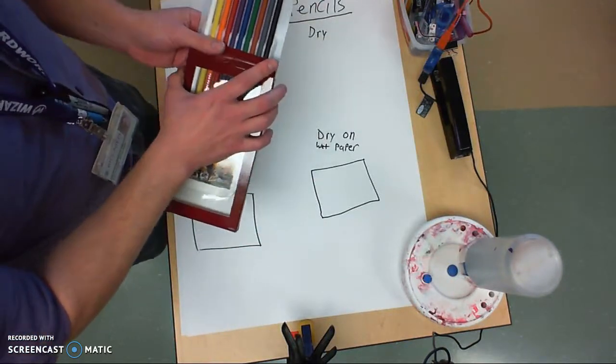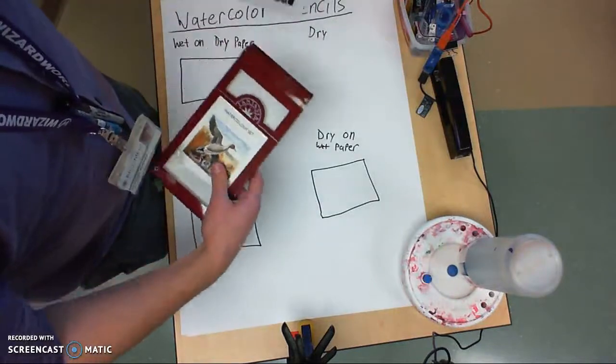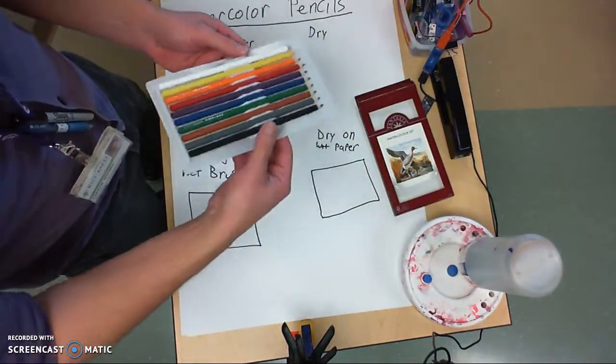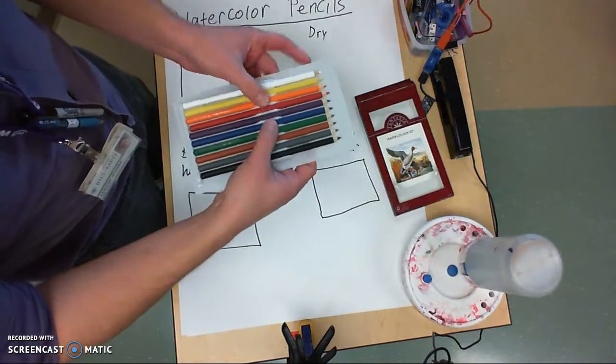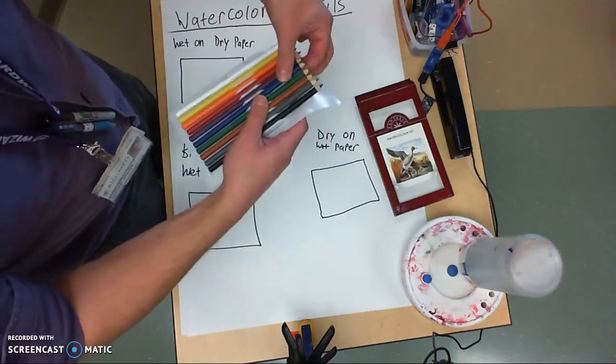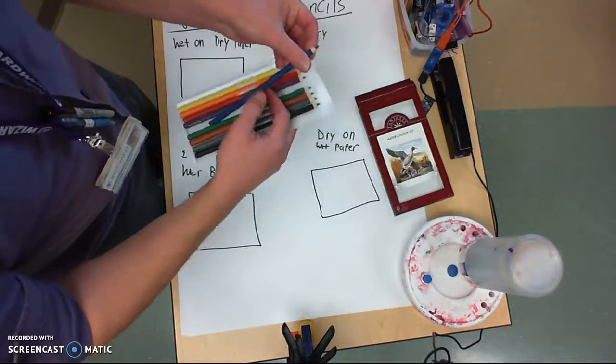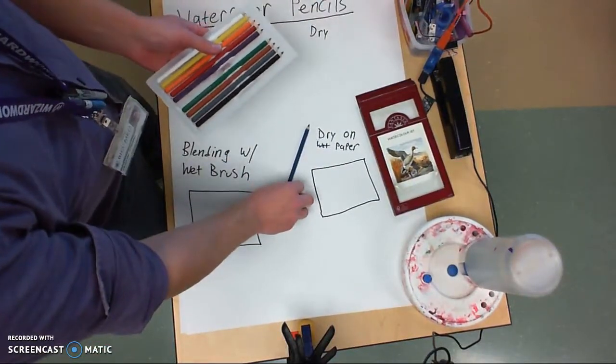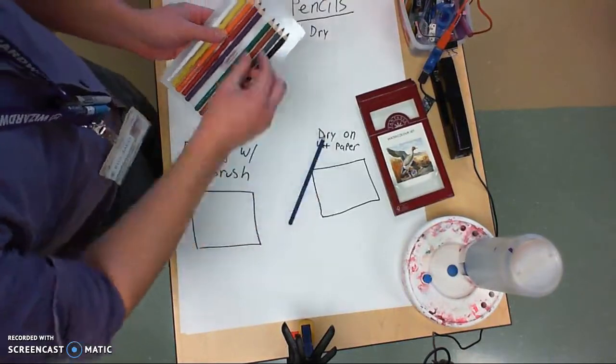One of the things that you want to do with watercolor pencils is make sure they stay in the tray and the container in the box when you're not using them. The little tray has little plastic grip things. Just carefully get them out one at a time as you need them and keep them on your table and be mindful of where they're at.